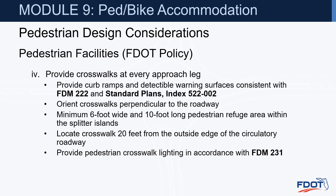Provide crosswalks at every approach leg. Provide curb ramps and detectable warning surfaces consistent with FDM 222 and standard plans index 522-002. Orient crosswalks perpendicular to the roadway. Provide a minimum 6-foot width and 10-foot long pedestrian refuge area within the splitter islands. Locate the crosswalk 20 feet from the outside edge of the circulatory roadway. Provide pedestrian crosswalk lighting in accordance with FDM 231.